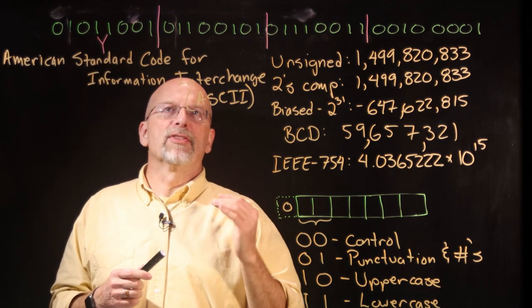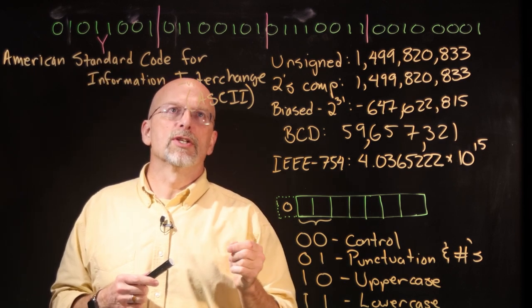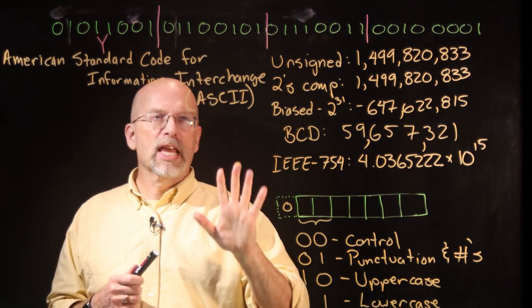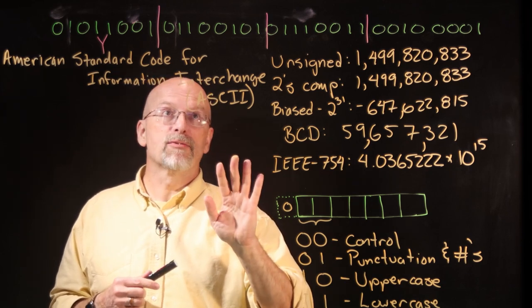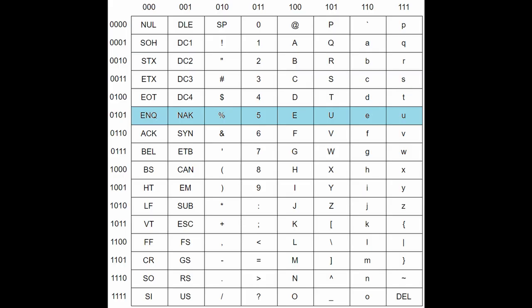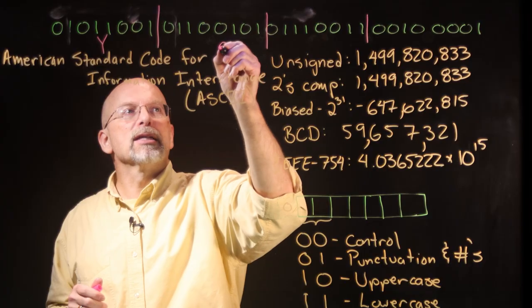Let's look at the next byte. The next byte is 0, 1, 1, 0, 0, 1, 0, 1. Let's once again start with the least significant 4 bits, the 0, 1, 0, 1. We go down the rows until we find the row identified by 0, 1, 0, 1. And go across until we get to the column identified by 1, 1, 0. That gives us the lowercase e.